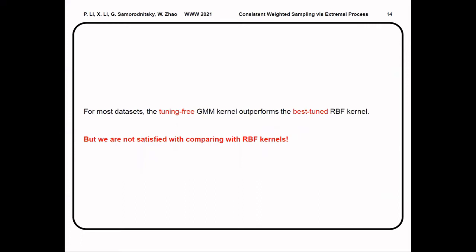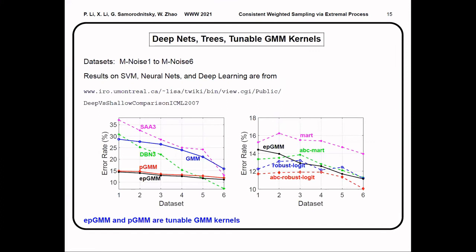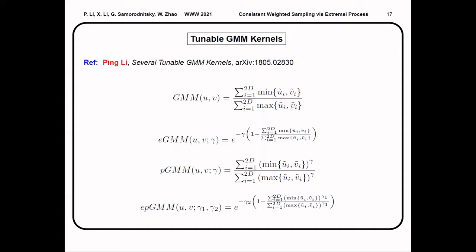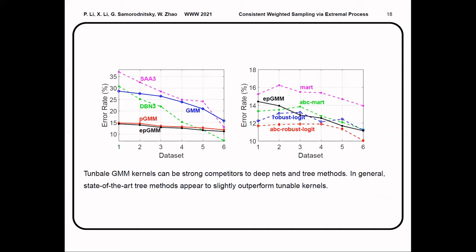But we are not satisfied with only comparing with the RBF kernels. So we did more experiments on deep neural nets and tree methods. We compare with four variants of gradient boosting trees. For GMM kernels, we can add some tuning parameters to make them more powerful. Here we consider three variants of tunable GMM kernels in the form of exponential, power, or both. We see that the tunable GMM kernels can be strong competitors to deep nets and tree methods.